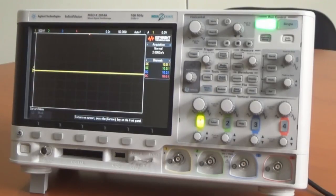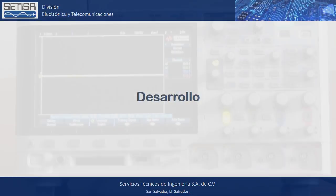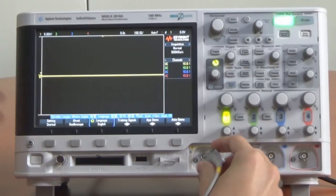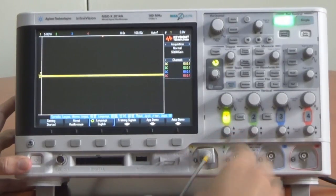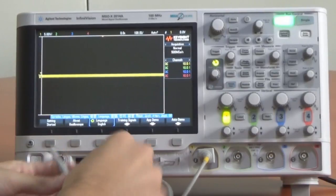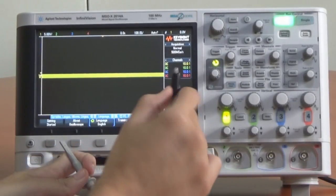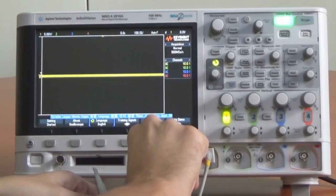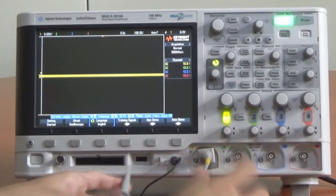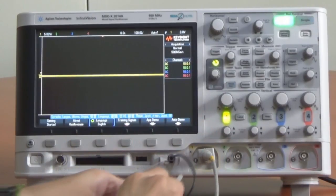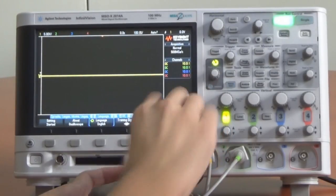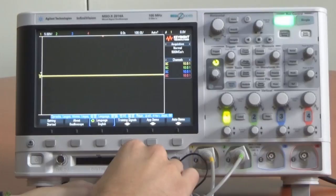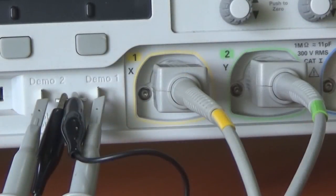Desarrollo. Primero vamos a conectar una sonda o punta entre el BNC de entrada para el cual utilizaremos el canal 1 y el terminal de salida etiquetado como Demo 1. Además, conectaremos la pinza de tierra de la sonda al terminal central de tierra del osciloscopio. Realizaremos el mismo procedimiento con la segunda sonda, la cual irá conectada entre el BNC del canal 2 y el terminal de salida etiquetado como Demo 2.